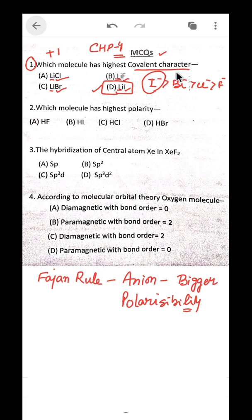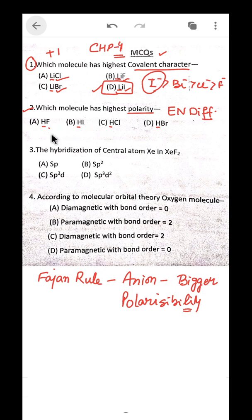The next question asks which of the following has the highest polarity. Polarity depends upon the electronegativity difference. Here hydrogen is common and the difference comes from halogens. Fluorine is the most electronegative element in the periodic table, so HF has the highest polarity — meaning the greatest positive-negative charge separation occurs in the case of HF.